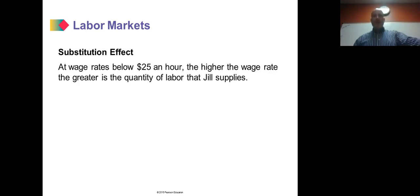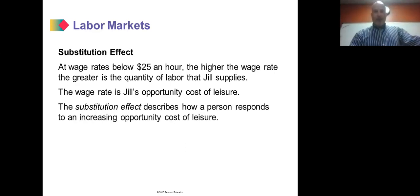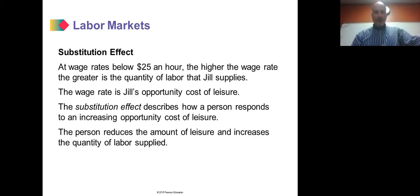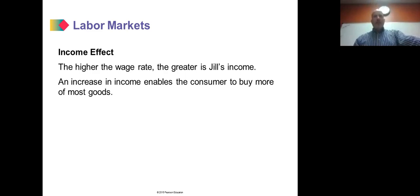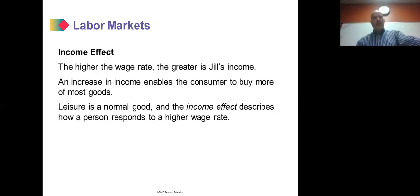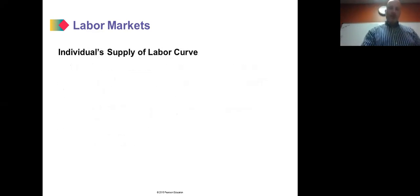Below $25 an hour, the higher the wage rate, the greater the quantity of labor Jill supplies — the substitution effect. The wage rate is Jill's opportunity cost of leisure, and the substitution effect describes how a person responds to an increasing opportunity cost by reducing leisure and increasing labor supplied. The income effect works the opposite way: the higher the wage rate, the greater Jill's income, and since leisure is a normal good, she will increase leisure and decrease labor supplied.